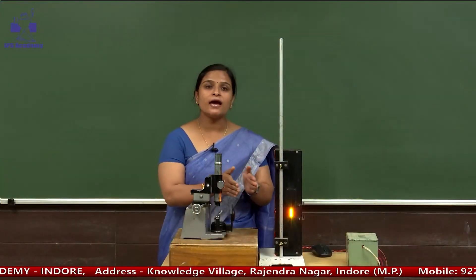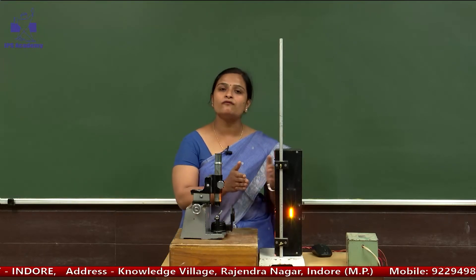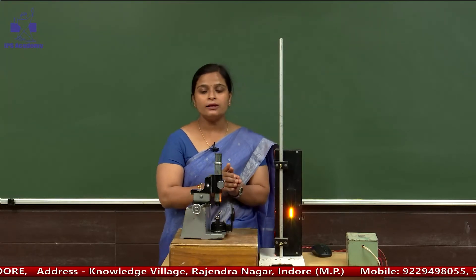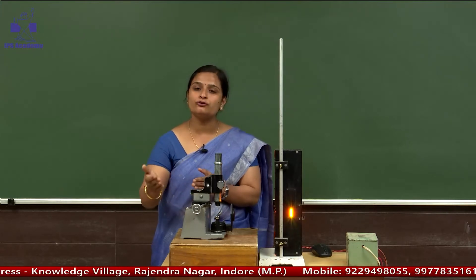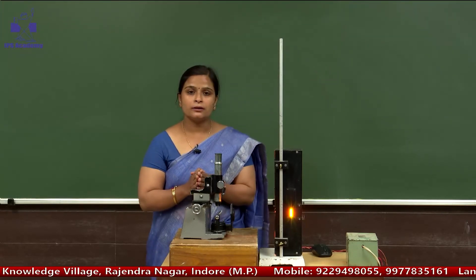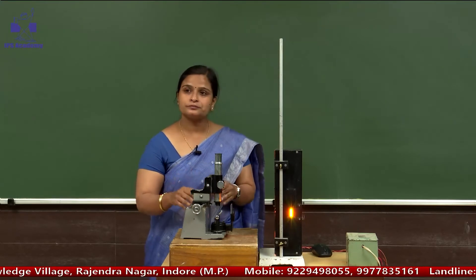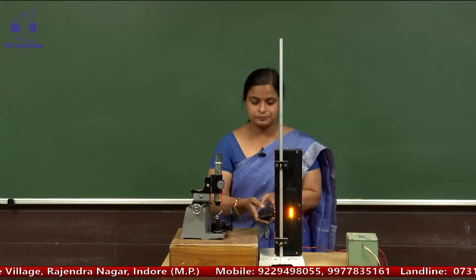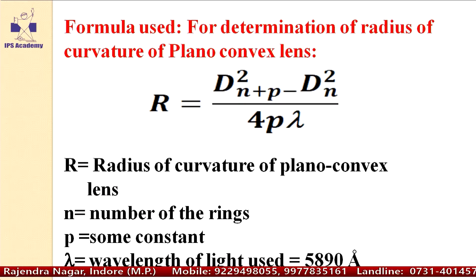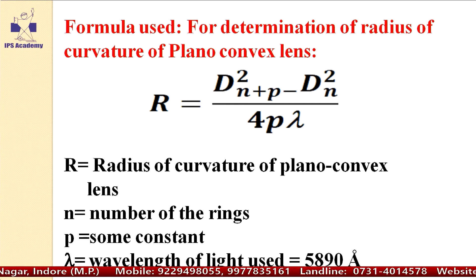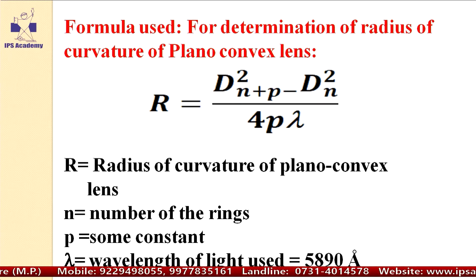On the left hand side, we have 10 readings from the fifth ring to the 14th ring, and on the right hand side also we have readings from fifth to 14th. Now we can see the table. Here we are calculating the radius of curvature of a plano-convex lens with the formula: d²(n+p) minus d²n, all divided by 4p lambda.